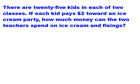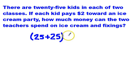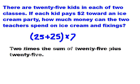There are 25 kids in each of two classes. If each kid pays 2 bucks toward an ice cream party, how much money can the two teachers spend on ice cream and fixings? We've got 25 kids in one class and 25 kids in another class, so we've got a total of this many kids. Each of them paid 2 dollars. So that should match the expression in your notebook. In word form, it would be 2 times the sum of 25 plus 25.